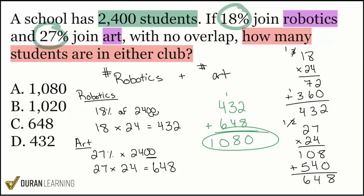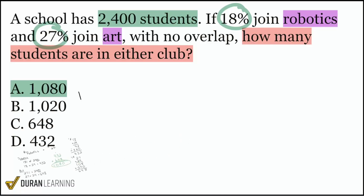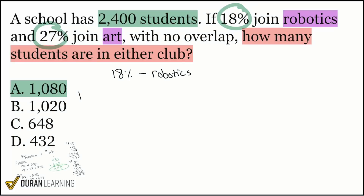Before we move on, I really want to show you the difference between knowing one way to do it and knowing the best way to do it. Let me show you the better way in this case. We had 18% for robotics and 27% for art. Because we know that they don't overlap, we are able to add these percentages in the same way we added the actual amounts.